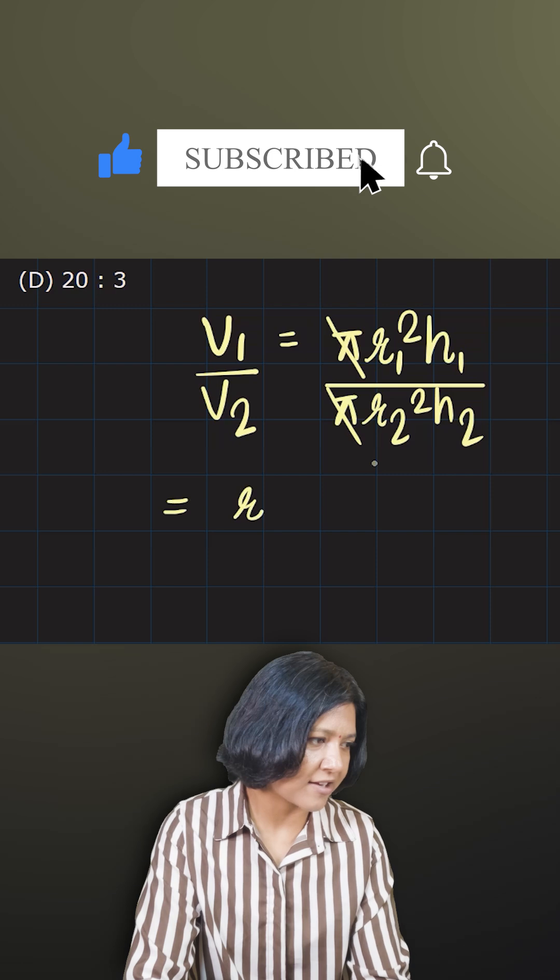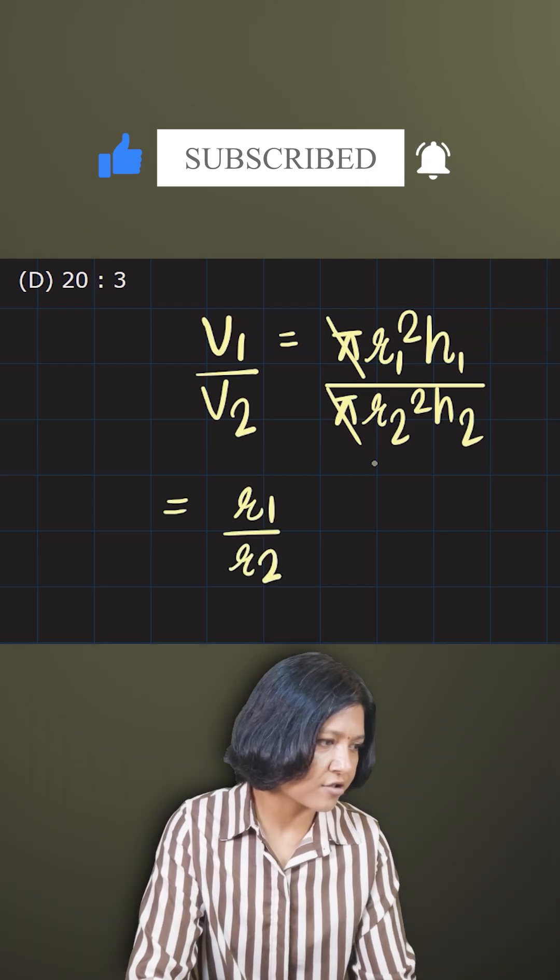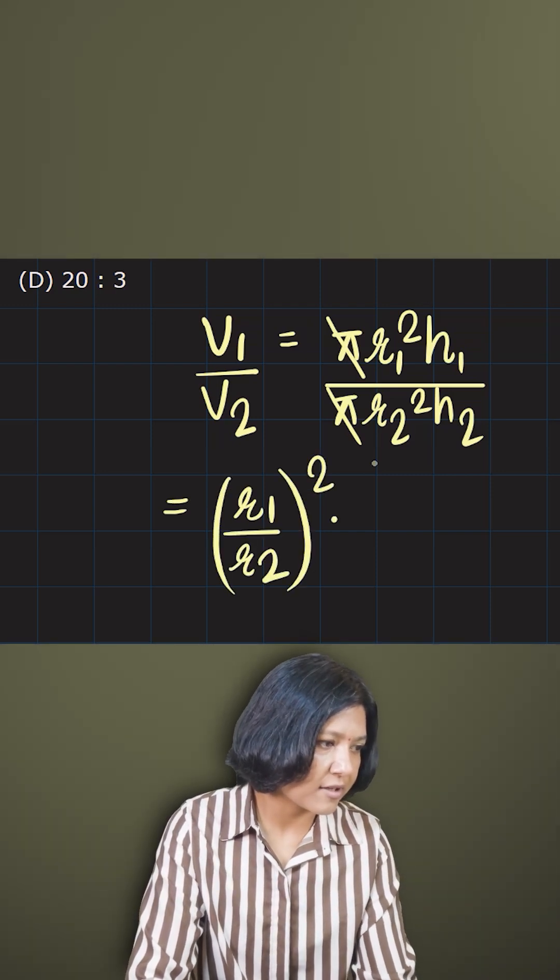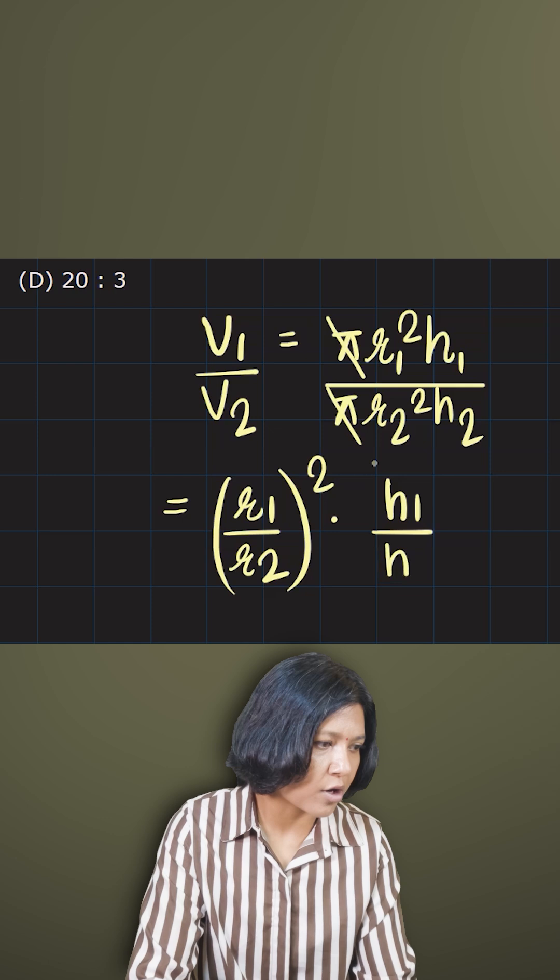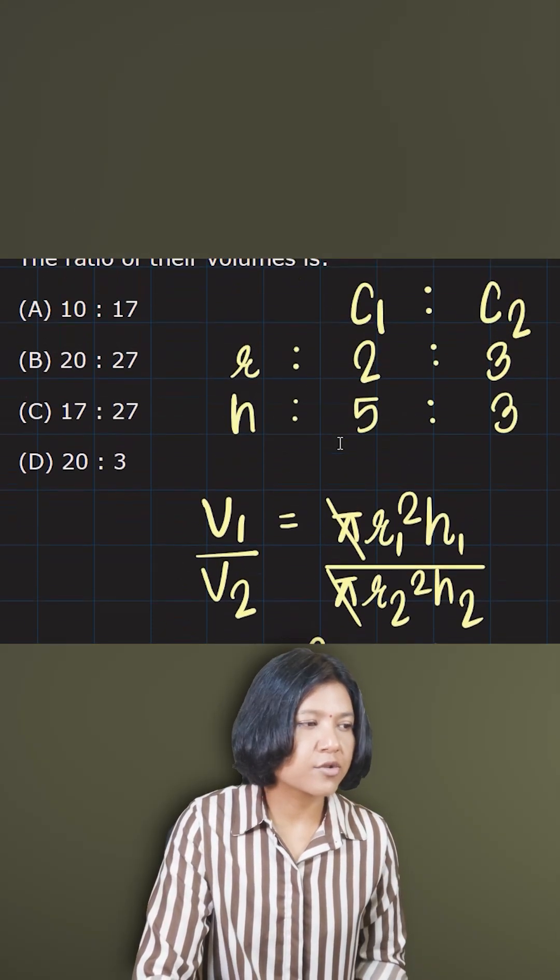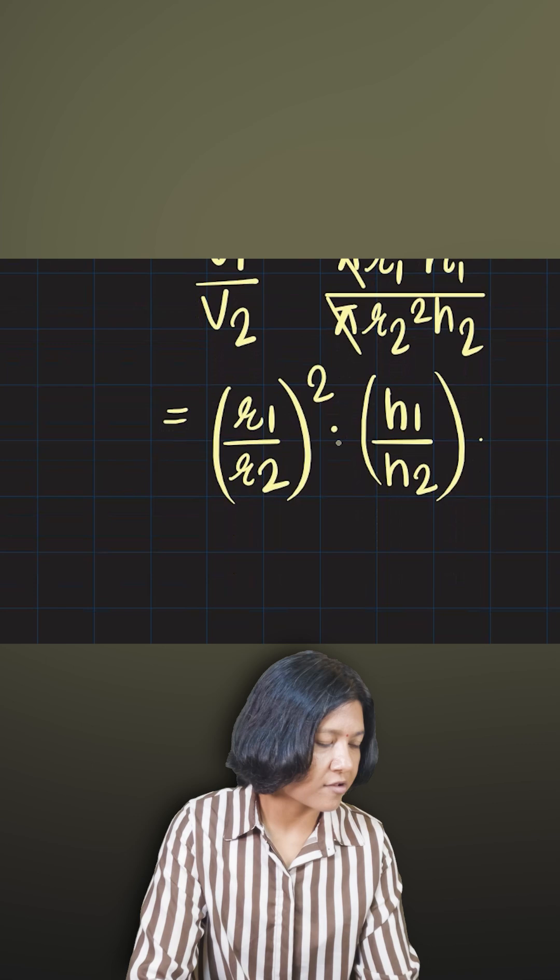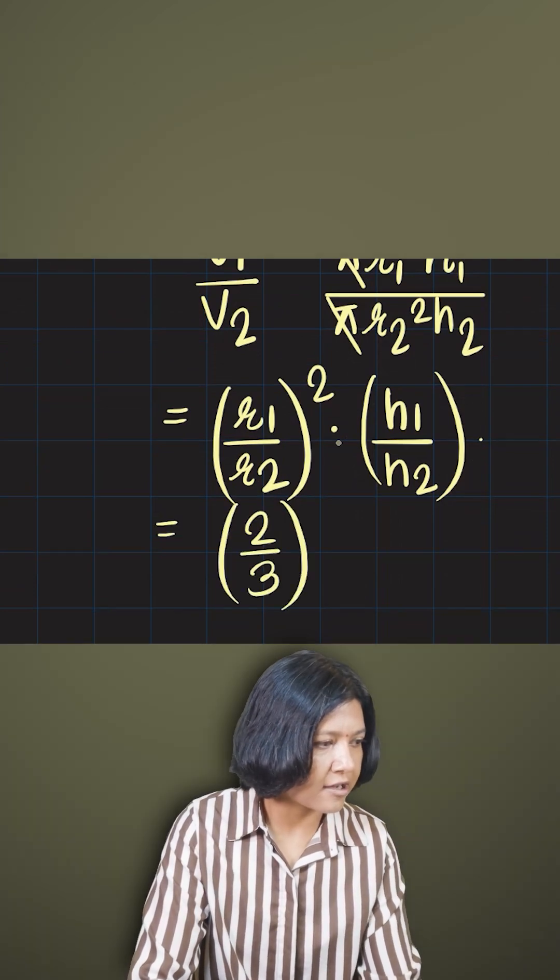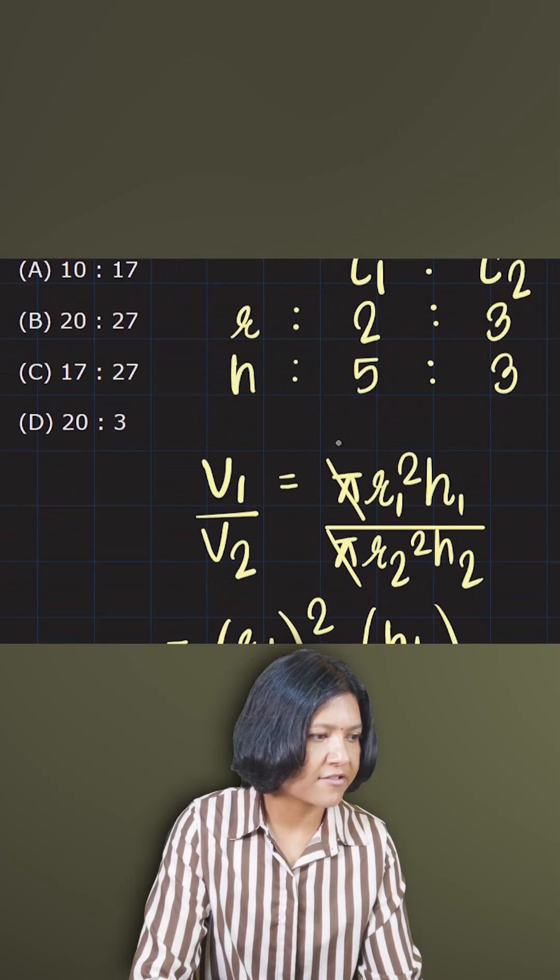I can write this as r1 upon r2 the whole square, and similarly I can write this as h1 upon h2. There is no power, so keep it as it is. R1 upon R2 is 2 upon 3, so I have to square 2 upon 3. And on the height side I have 5 is to 3, so I'm going to write 5 and 3.